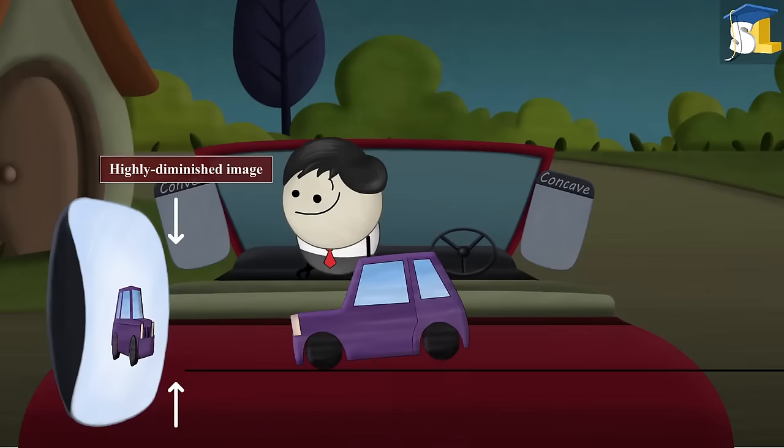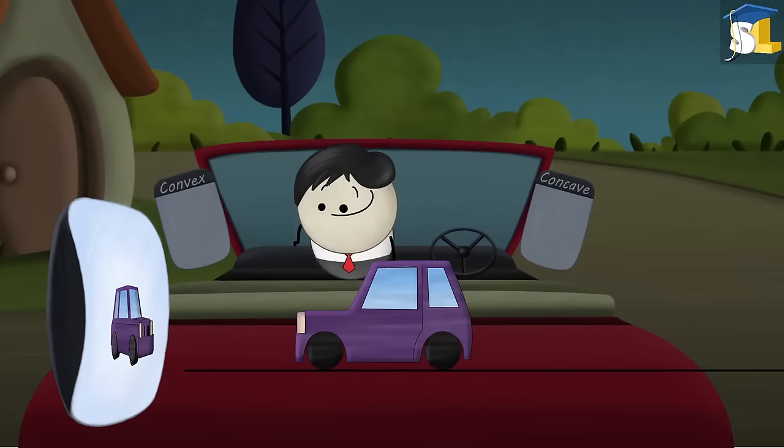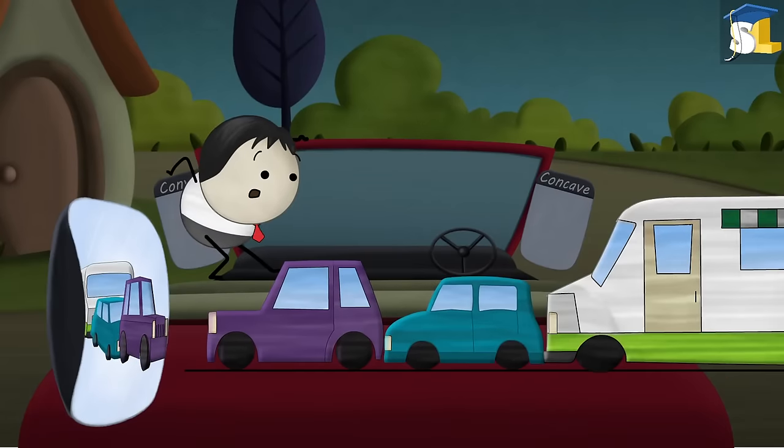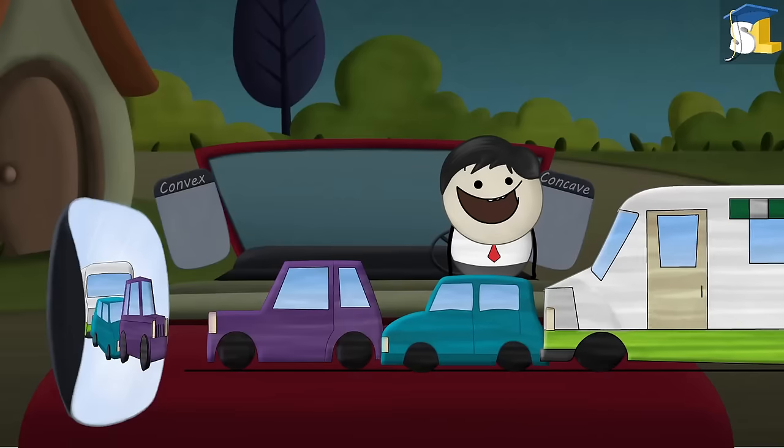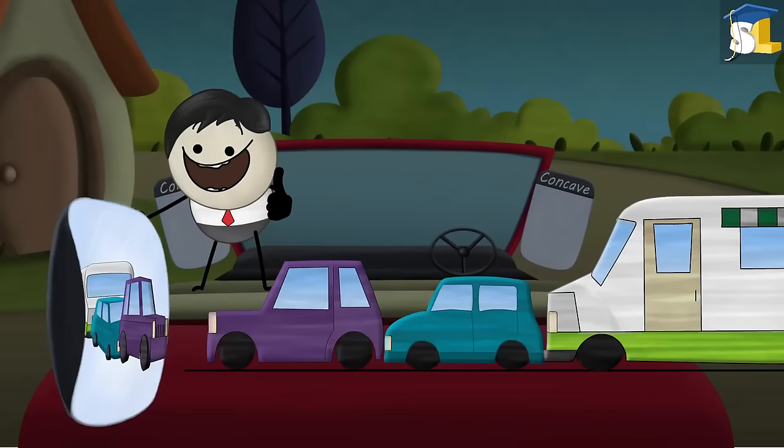This is because a convex mirror forms a highly diminished image. Thus, making the traffic look much smaller. As a result, we can see a large number of vehicles in a very small mirror.